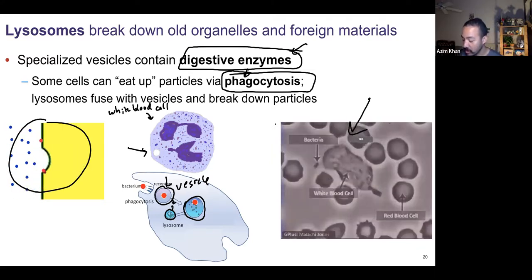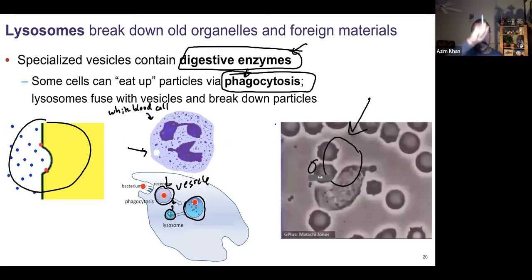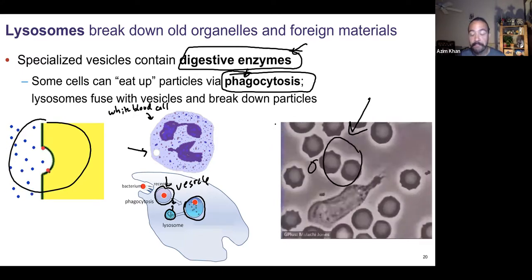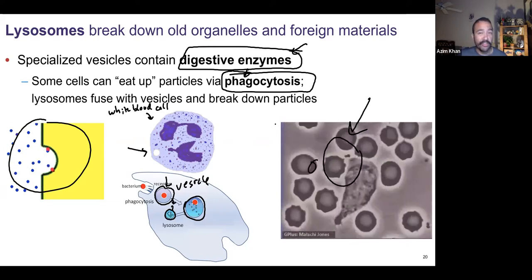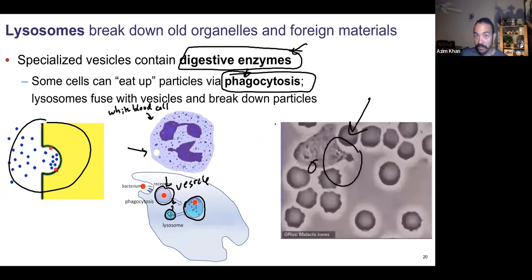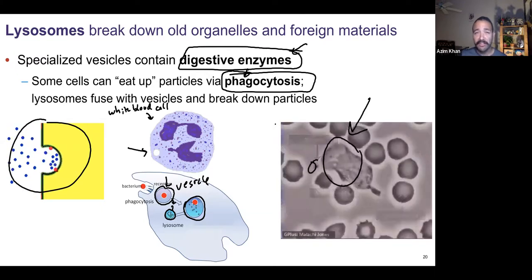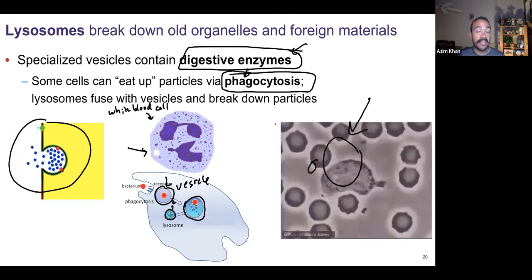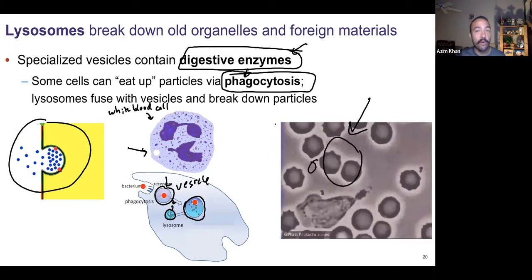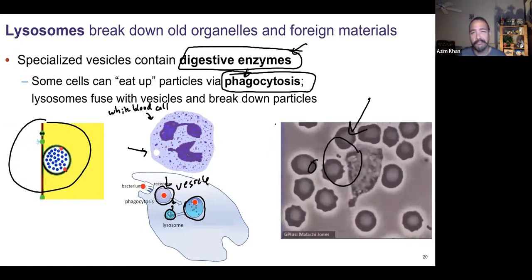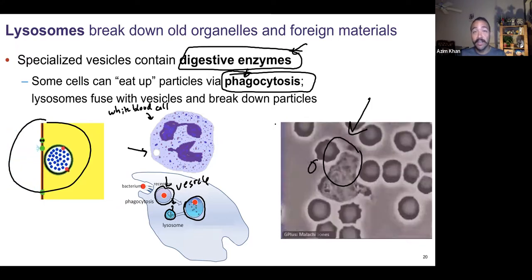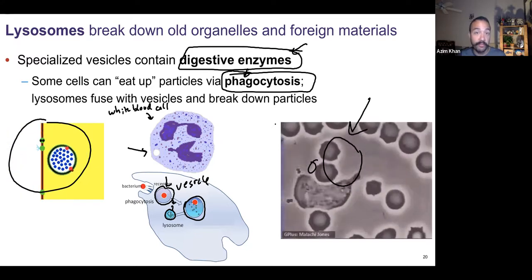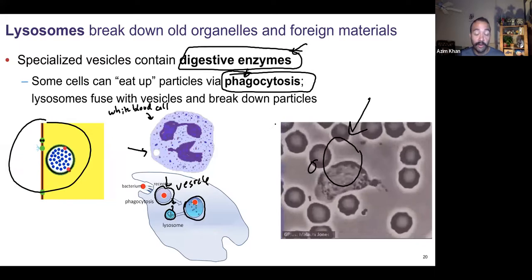This animation shows a white blood cell chasing a bacterium, engulfing it by phagocytosis, and digesting it with the help of lysosomes. Lysosomes aren't just needed for white blood cells — all cells need to break things down. Our organelles don't last forever and need to be recycled. We can eat up an old rough endoplasmic reticulum, break it down, and use the component parts again for making new organelles.